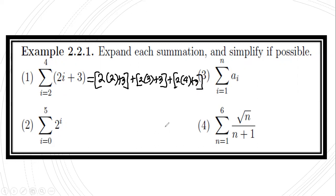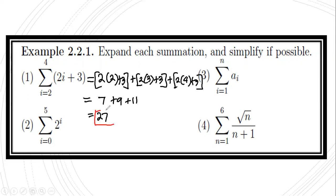Now we simplify: 2×2 + 3 = 7, 2×3 + 3 = 9, and 2×4 + 3 = 11. Adding them: 7 + 9 + 11 = 27. So the summation of (2i + 3) where i ranges from 2 to 4 is equal to 27.